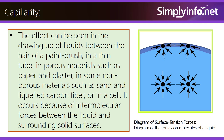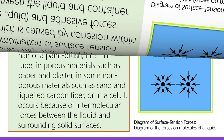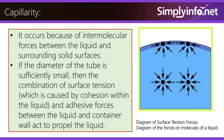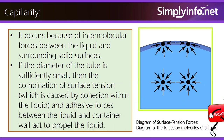It occurs because of intermolecular forces between the liquid and surrounding solid surfaces. If the diameter of the tube is sufficiently small, then the combination of surface tension — which is caused by cohesion within the liquid — and adhesive forces between the liquid and container wall act to propel the liquid.